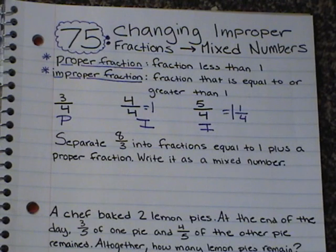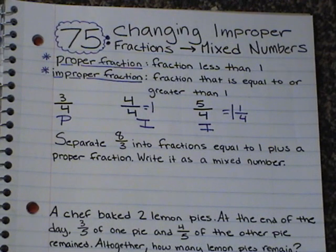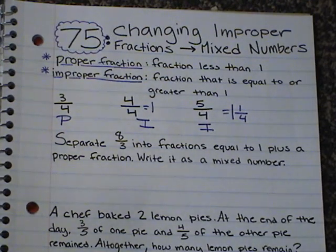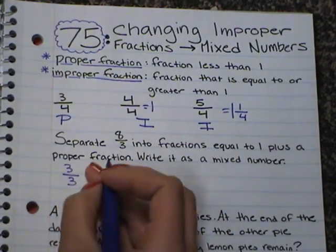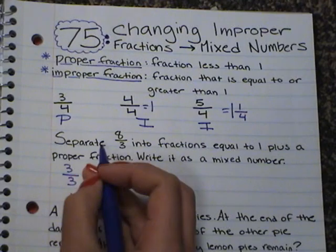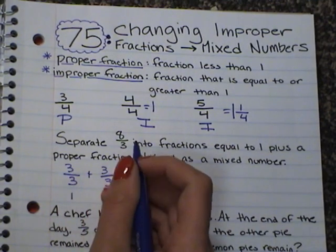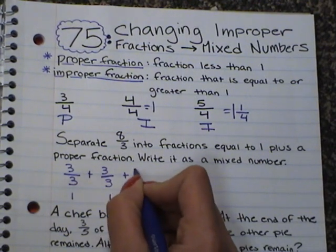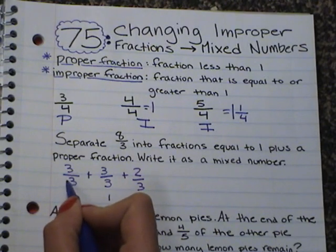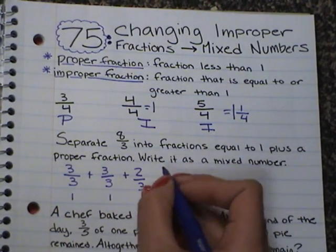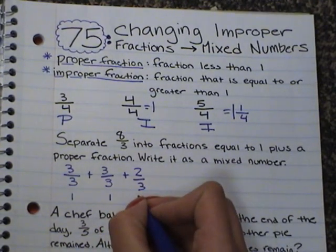Our first example: separate 8 thirds into fractions equal to 1 plus a proper fraction, then write it as a mixed number. So we're taking 8 thirds and we want to first make it into fractions that are equal to 1. Our denominator is 3, so 3 thirds equals 1. That's equal to 1. But we're going all the way up to 8, so we could add another 3 thirds, which is also equal to 1. That gives us 6, and 6 plus 2 equals 8 — so we have 2 thirds left over.